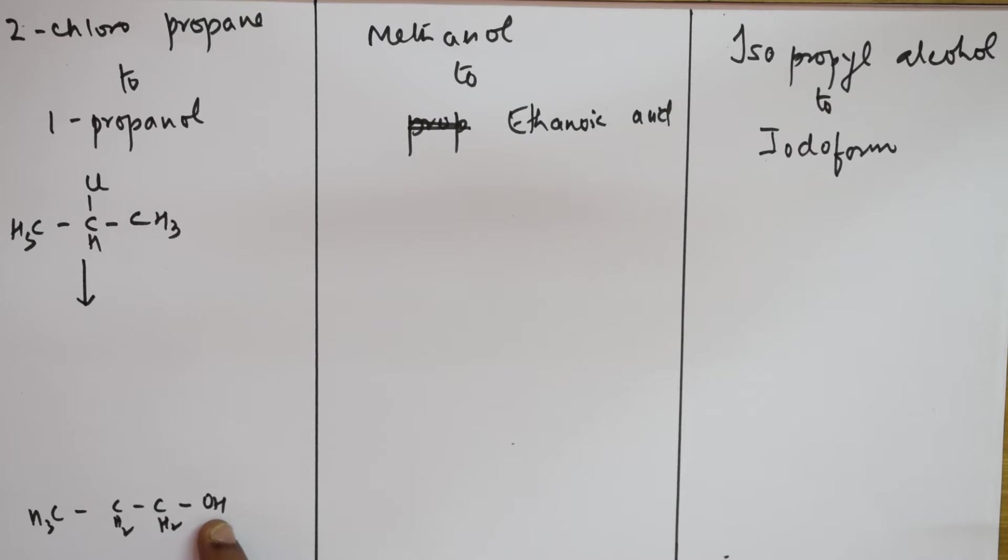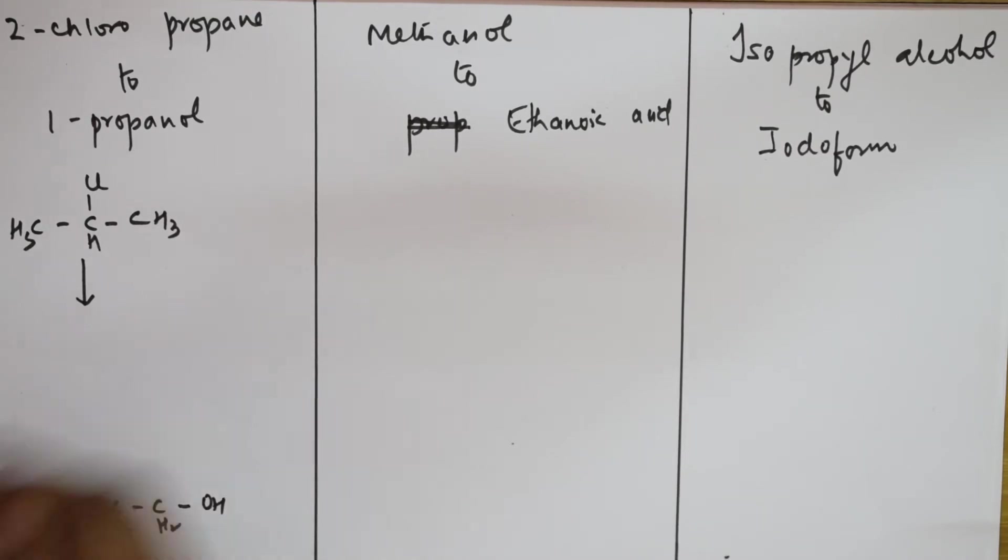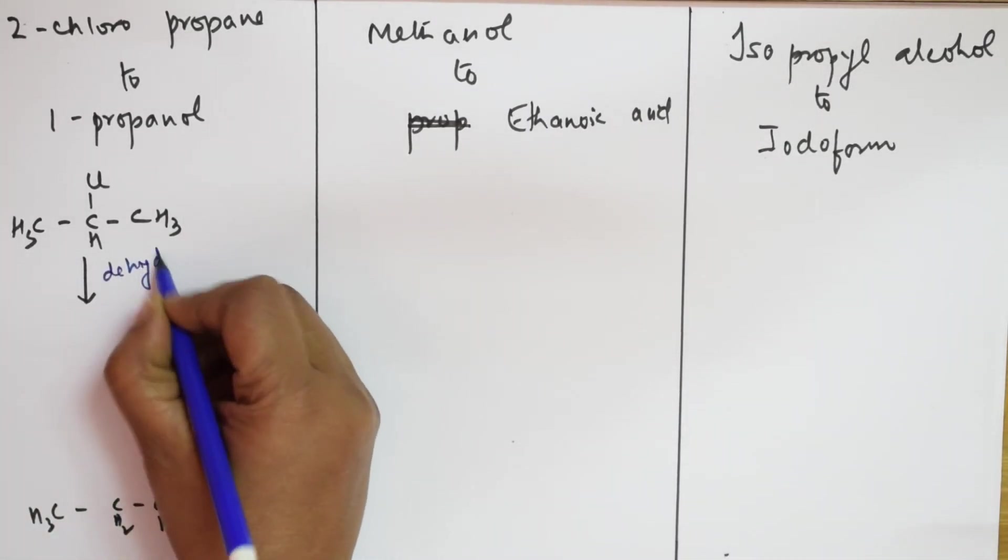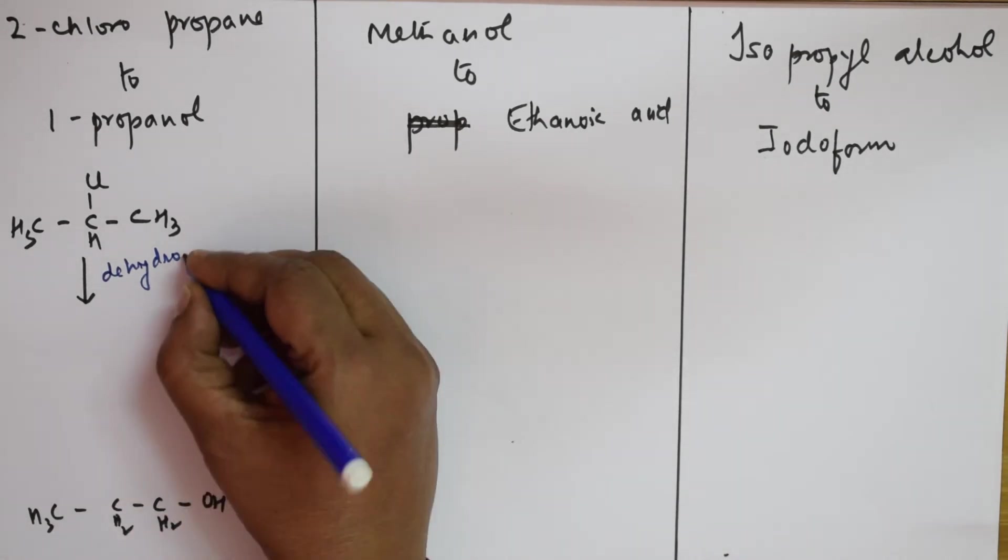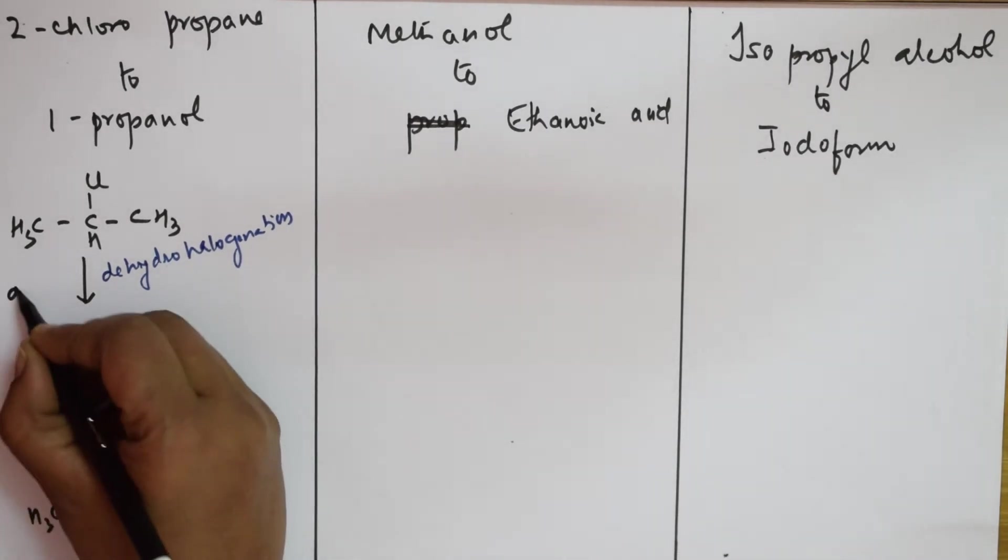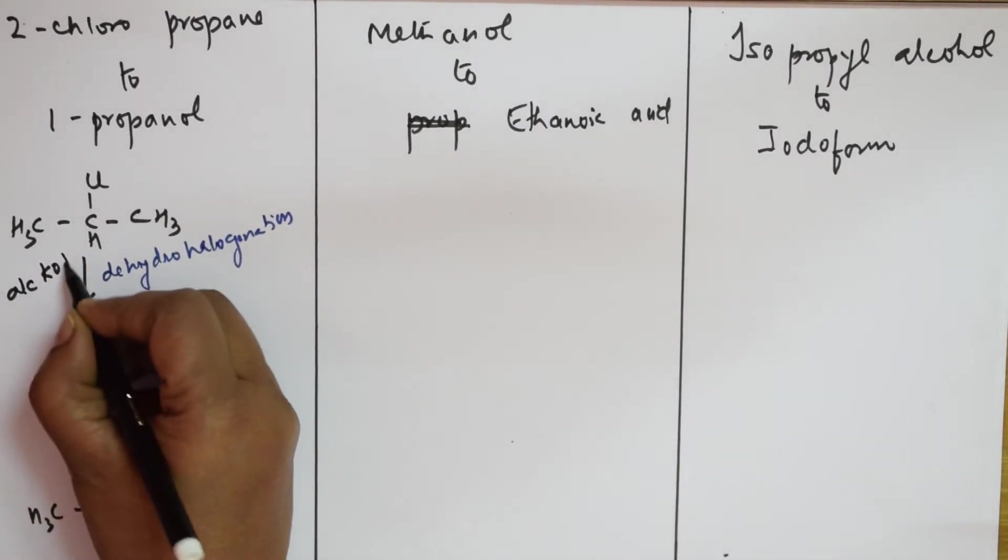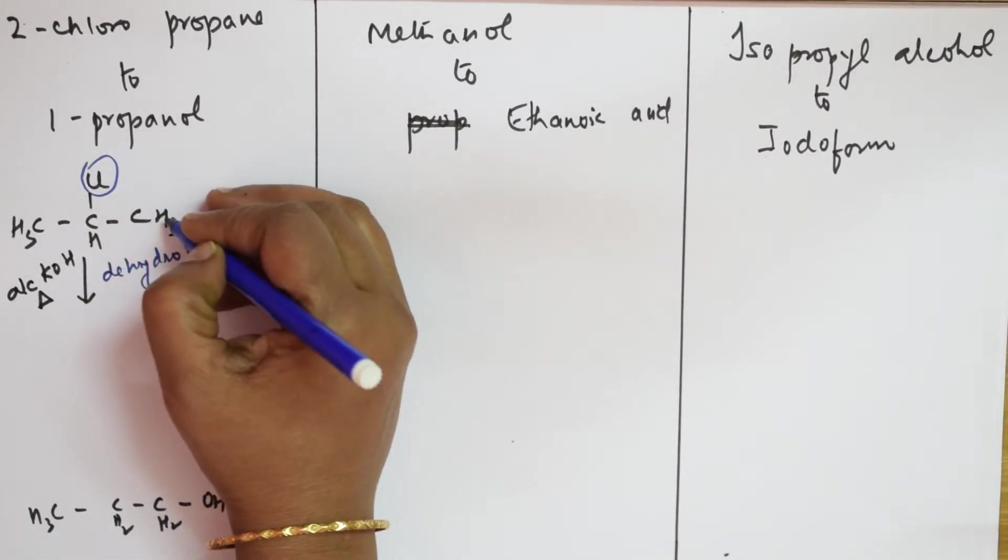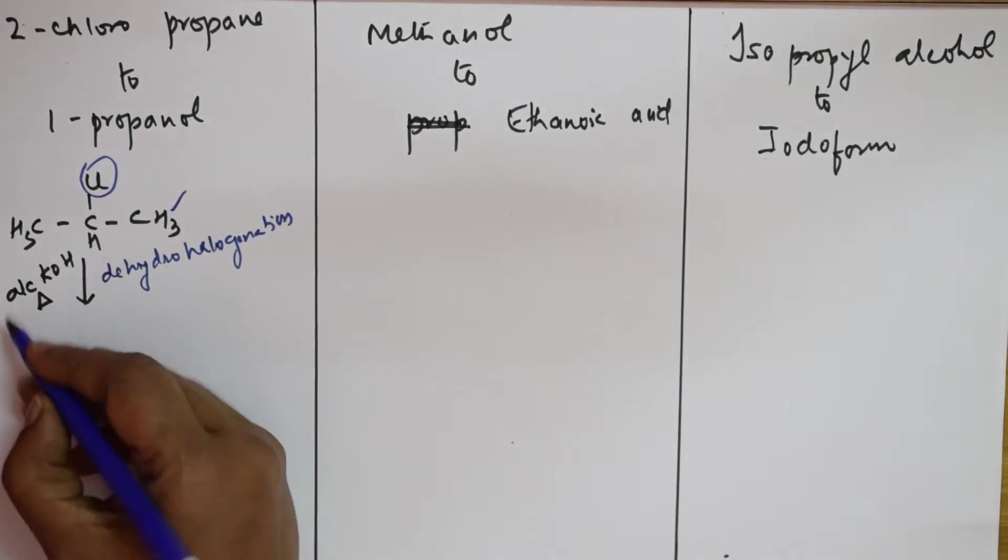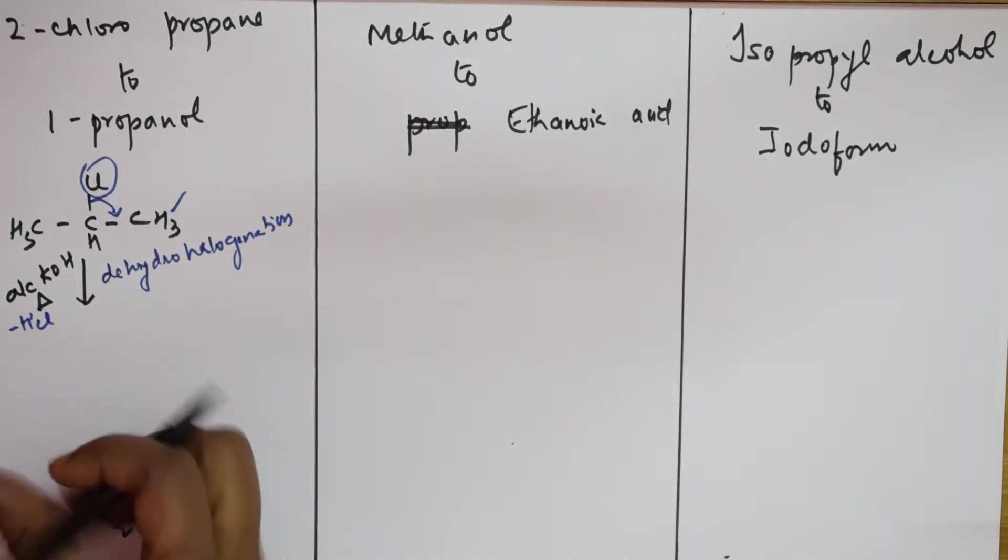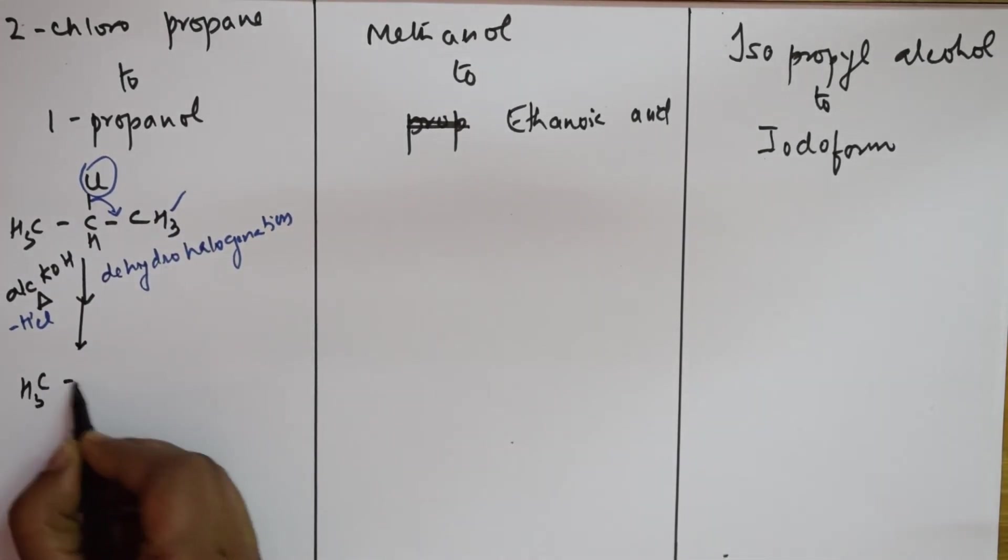What am I going to do? I'm going to do a process called dehydrohalogenation because I need to take out that and add this. In dehydrohalogenation reaction what will I use? I'm going to use alcoholic KOH and heat it. Then what will happen? Your Cl from here and your H from here will replace, so you get -HCl. Then the bond from here is going to shift. I'm going to get CH3-C=CH2. This is propene.